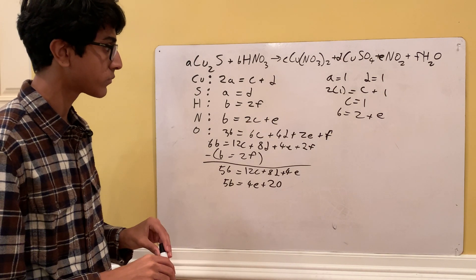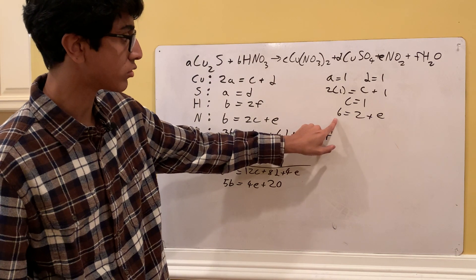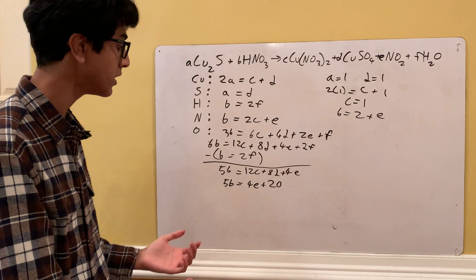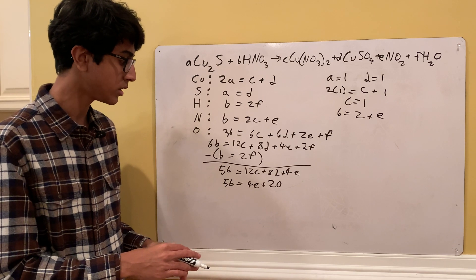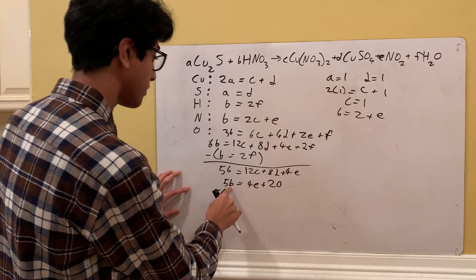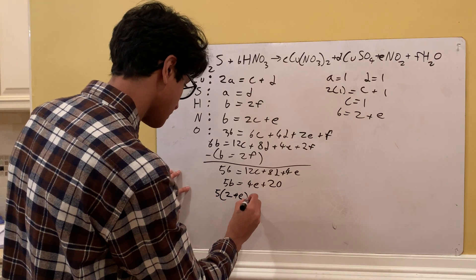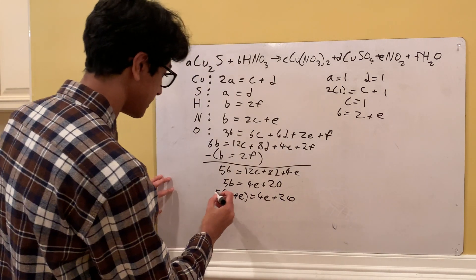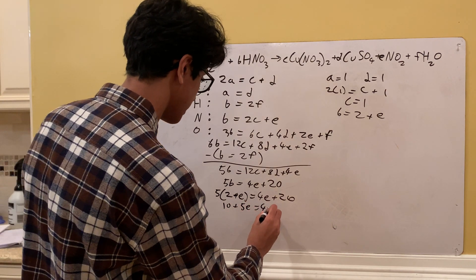Now we have two equations with just B and E: B = 2 + E and 5B = 4E + 20. Using substitution, we replace B with (2 + E) in the second equation: 5(2 + E) = 4E + 20, which expands to 10 + 5E = 4E + 20.